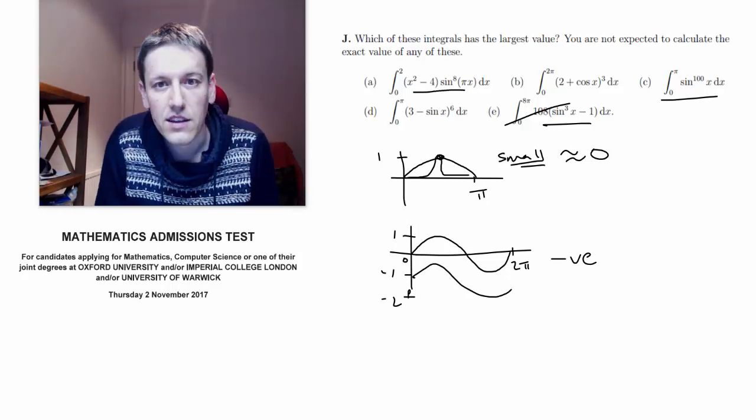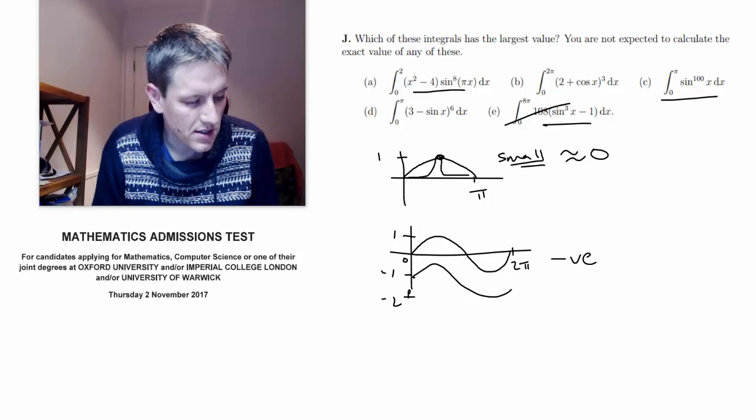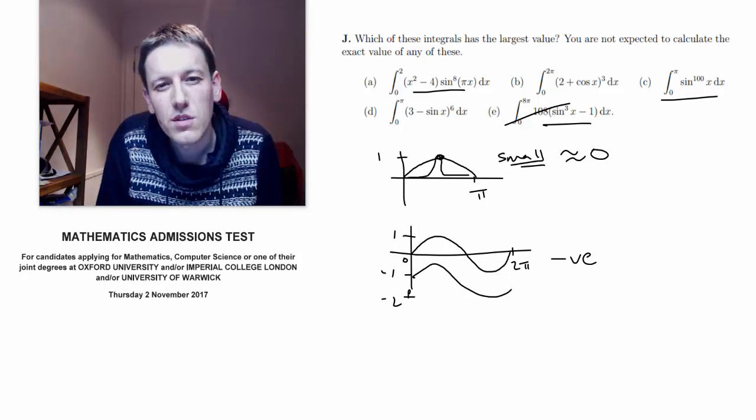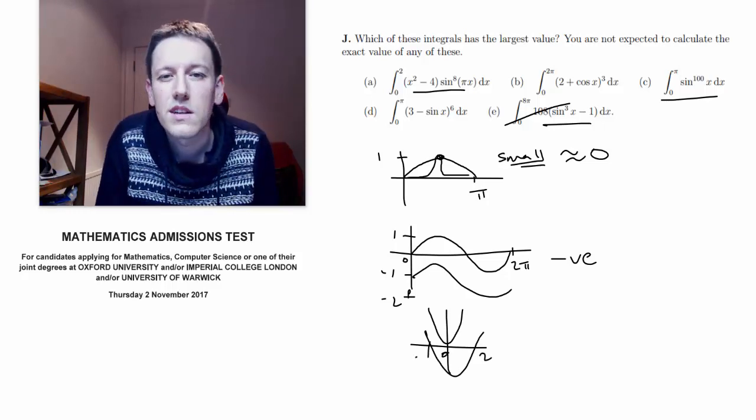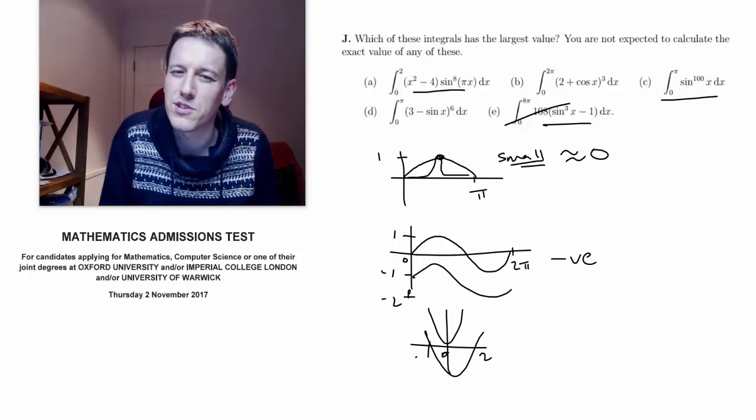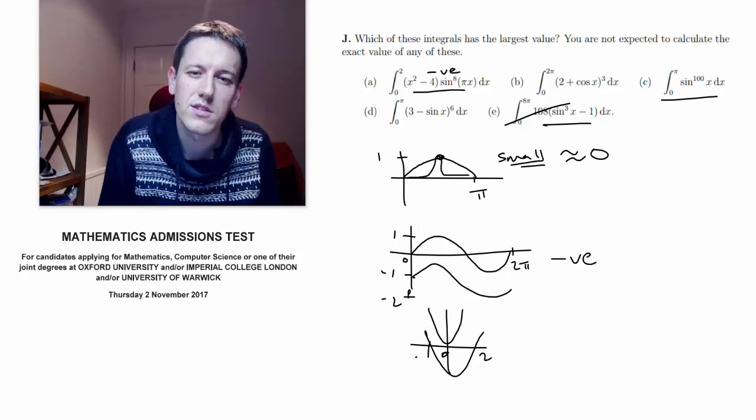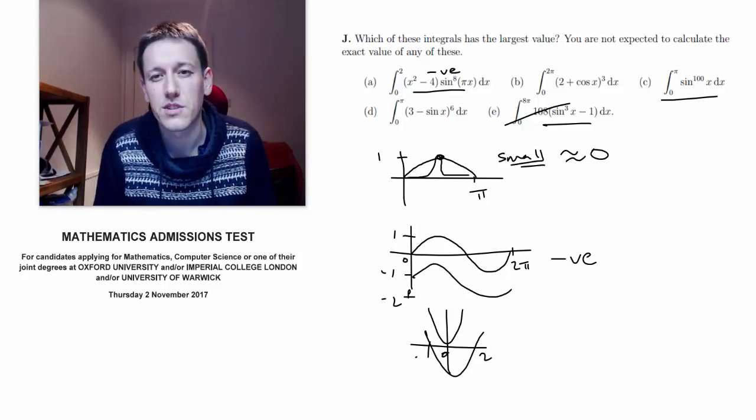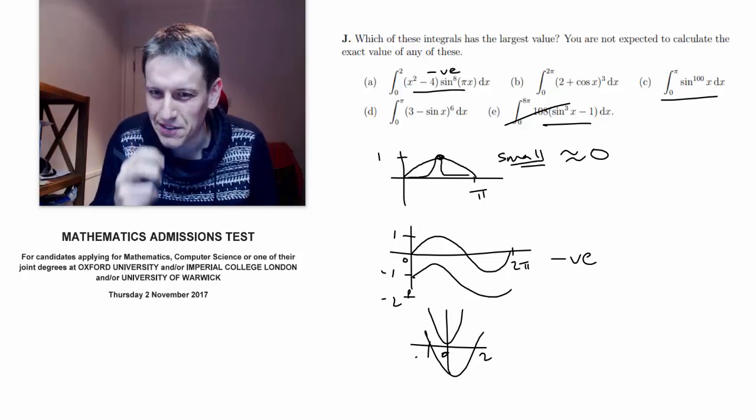Let's have a look at a. x squared minus 4 times sine 8 pi x. Between 0 and 2, x squared minus 4. So this is why it was x squared. Well, it was x squared minus 4. Between 0 and 2 is negative. And sine to the power of 8, but it's an even power, is always positive. So again, the integrand here is going to be negative for all values. So it's going to be a curve entirely below the axis. So that one's going to be negative. So it looks like c is still winning here. It's the only one that's positive so far.